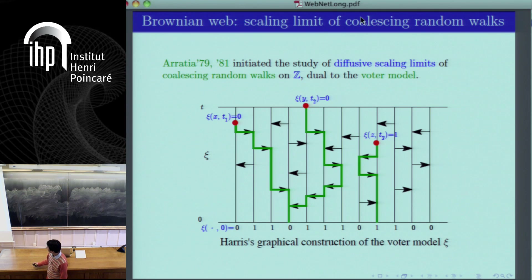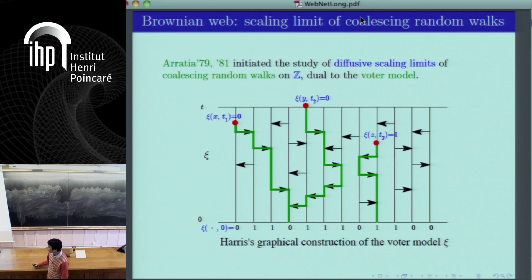Independently at each lattice site, with exponential rate 1, the voter at this location looks to either the neighbor on the left or the neighbor on the right — represented by the arrows. At this site, a clock rings and the voter looks to its left neighbor. When this happens, it simply changes its opinion to that of the neighbor it looks to. This collection of arrows determines which voter at which time should change its opinion. This is called the Harris graphical construction of the voter model.